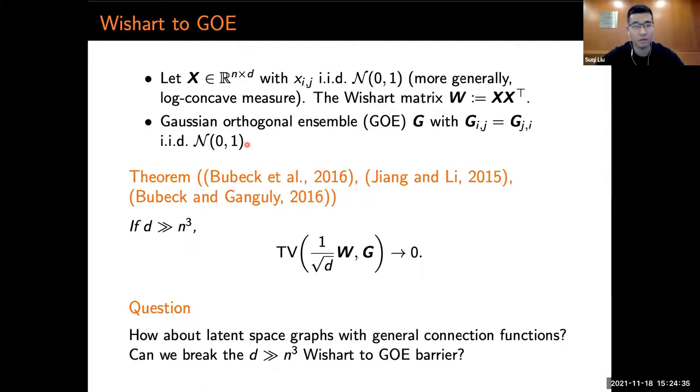Since we are talking about graphs with no self-loops, we usually ignore the diagonal entries and focus on the off-diagonals. Around 2015 and 2016, there are several papers that prove the following theorem. When we scale the Wishart matrix by 1/√d, the total variation distance between the scaled Wishart matrix and GOE goes to zero when dimension is much higher than n^3.